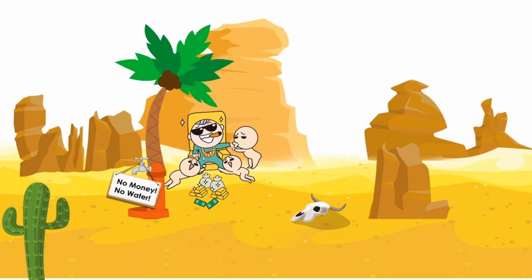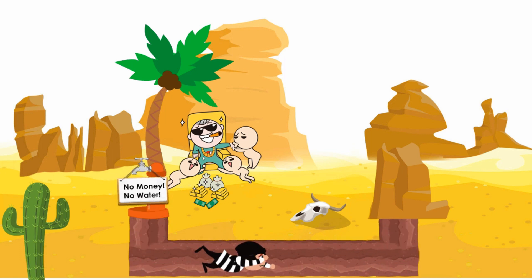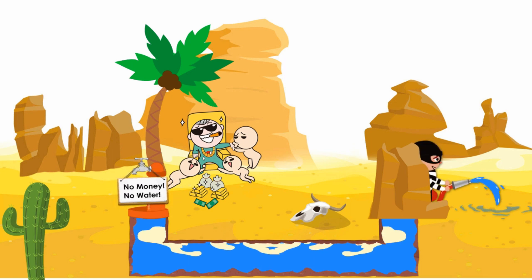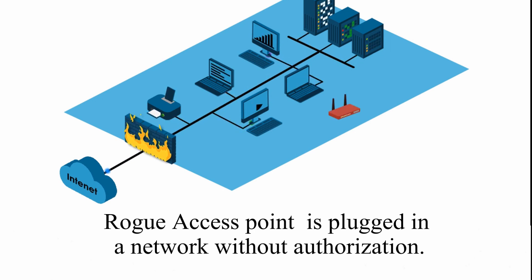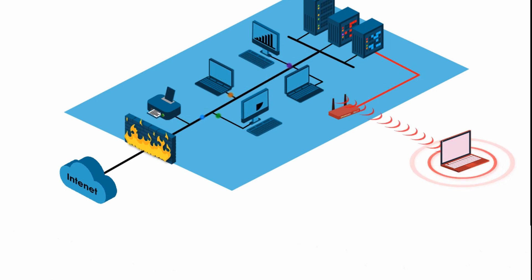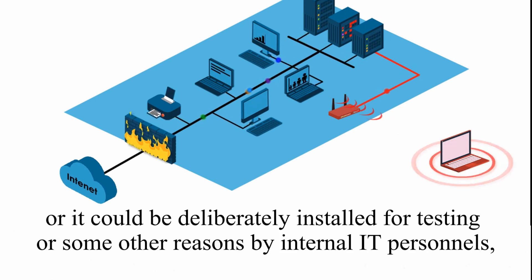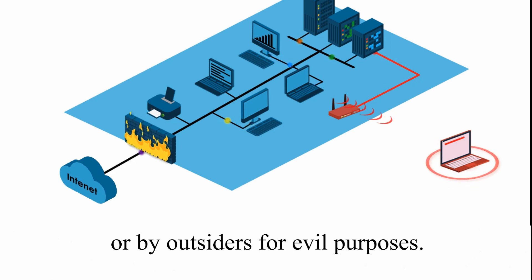Rogue Access Point is similar to tap water leaking or stealing oil from the main supply pipeline. Rogue Access Point is plugged into the network without authorization. It may be installed by a naive user, deliberately installed for testing or other reasons by internal IT personnel, or by outsiders for evil purposes.